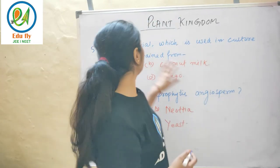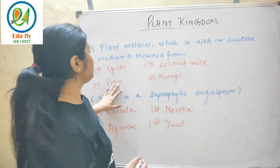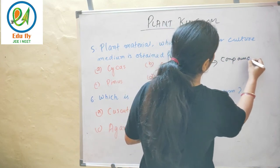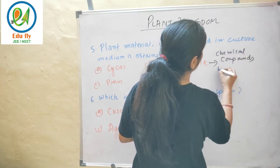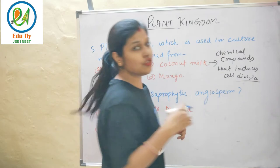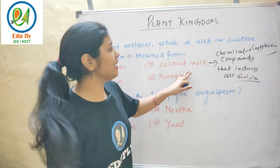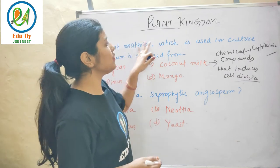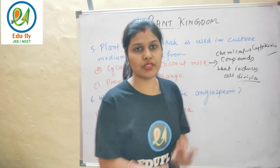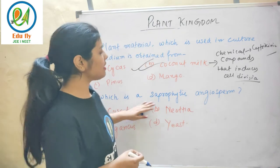The next question: which plant material used in culture medium is obtained from coconut milk, Pinus, or mango? Coconut milk has important chemical compounds that induce cell division. Cell division induction is done by cytokinin, and the functions of coconut milk and cytokinin resemble each other. So the option will be coconut milk.